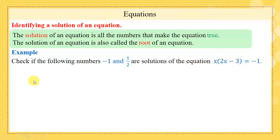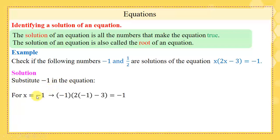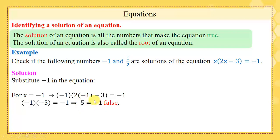Let us start by negative 1. We substitute negative 1 in the equation, replacing x by negative 1. We get negative 1 times 2 times negative 1 minus 3 equals minus 1. Reducing the left side gives minus 1 times minus 5 equals minus 1, then 5 equals minus 1. The left side is not equal to the right side, so this statement is false. This means that negative 1 is not a solution of this equation.